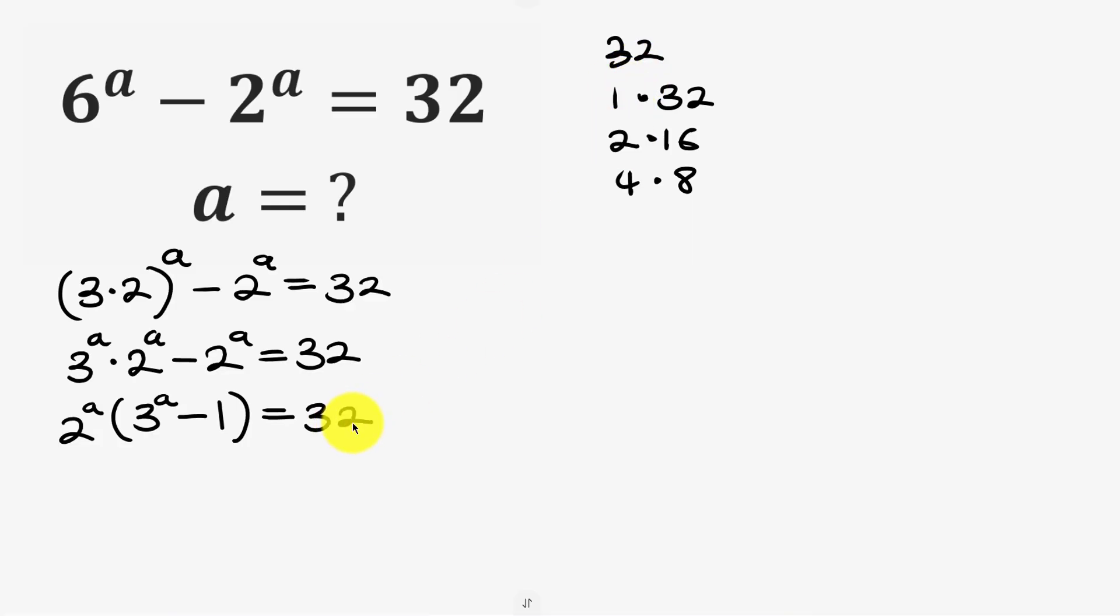But then again notice something: 2 to power a is always even, and 3 to power a is odd but when we subtract 1 it will always be even. So we have this factor as well to be even. So 2 even factors multiply to give 32. We're only interested in even factors of 32 that multiply.